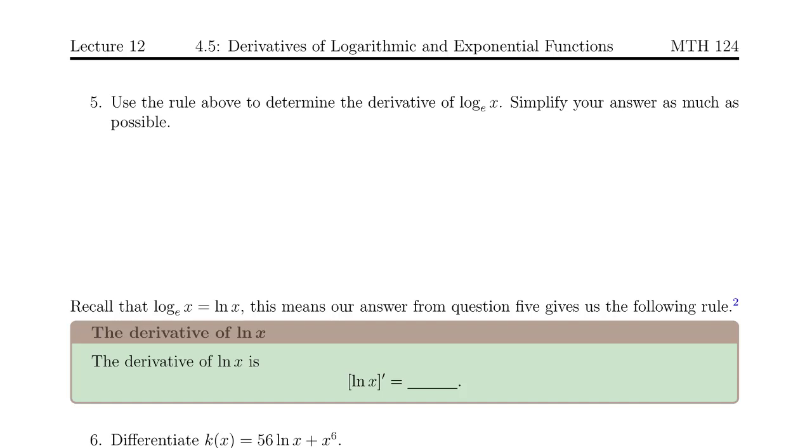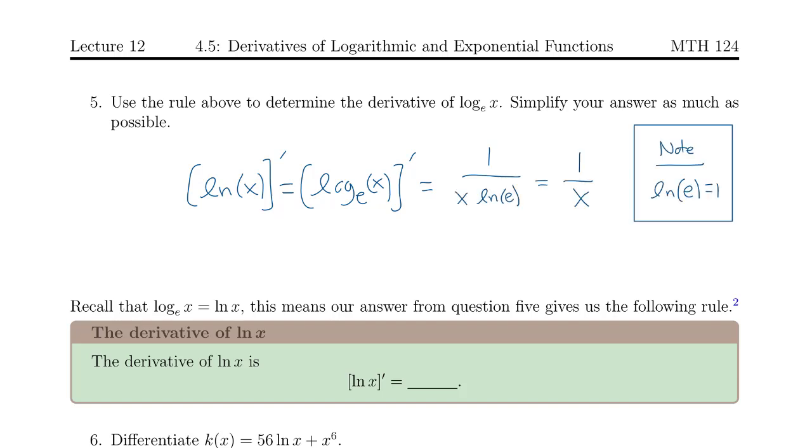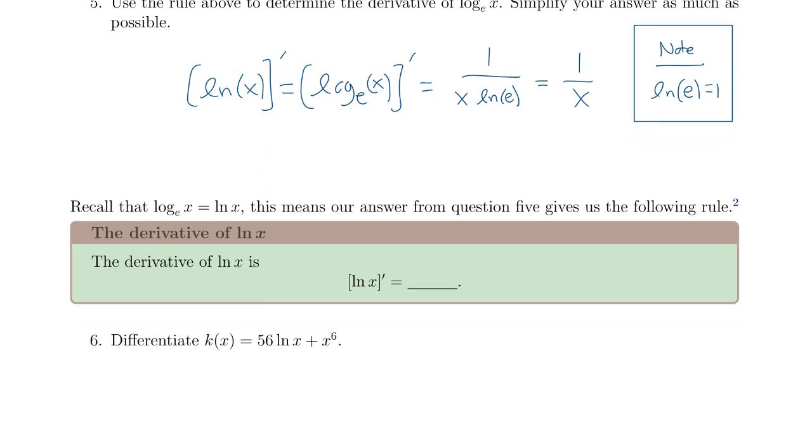So just like it was practical to find a particular rule for e to the x the same thing applies for the natural log of x. Recall that the natural log of x is just log base e. So if we want the derivative of natural log then we can understand that in terms of the derivative rule by writing it as log base e. When we apply the derivative rule for logarithms we get the following. This gives us the rule that the derivative of the natural log of x is just 1 over x.